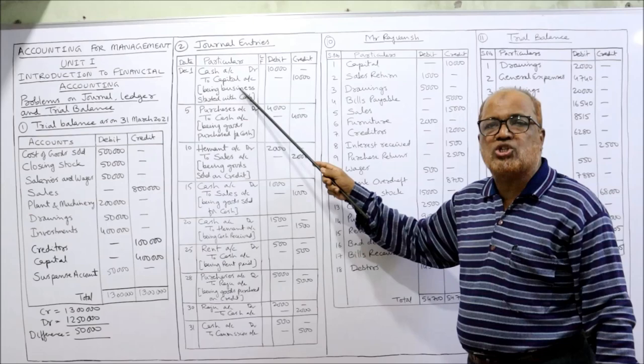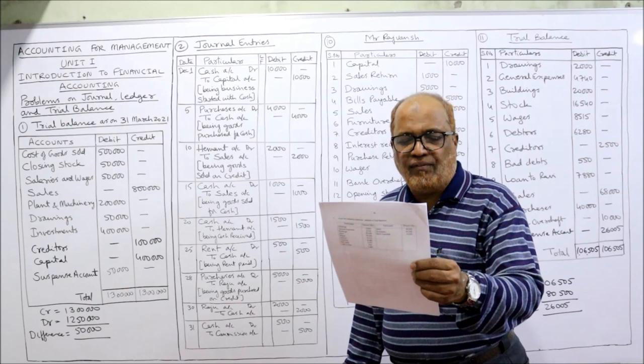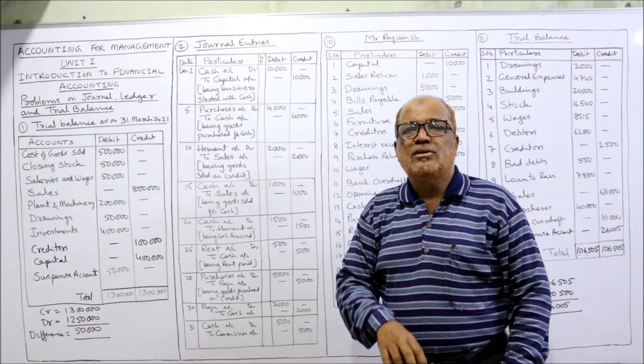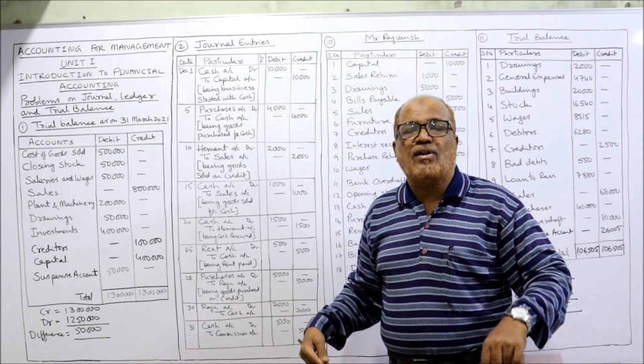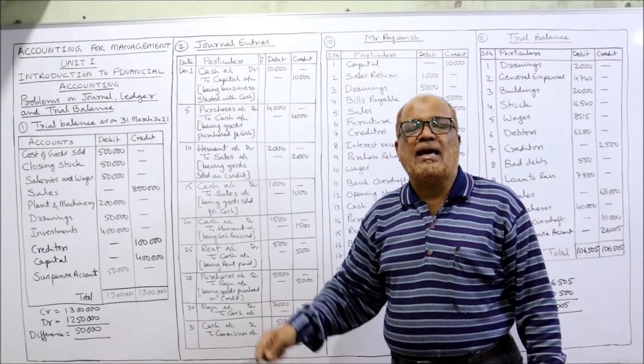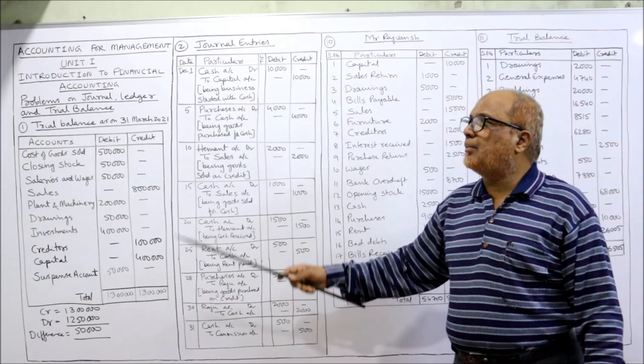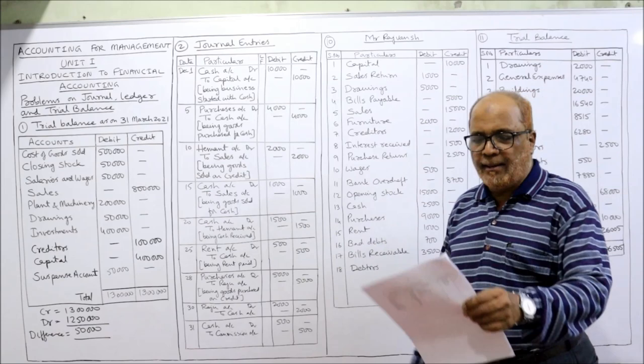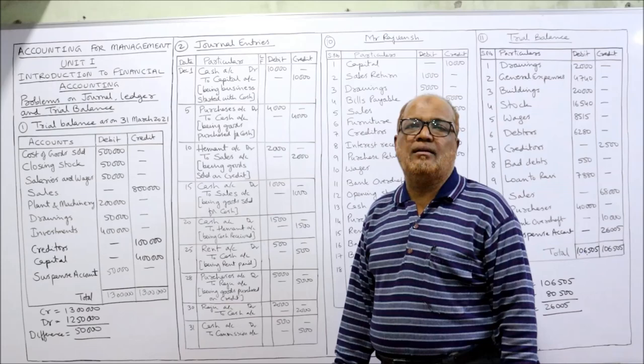Fifth: bought goods for cash. When we purchase goods, goods are coming in, so instead of writing goods we write purchases — purchases account debited. We are paying cash, so cash is credited. Entry: Purchases account Dr. 4,000 to Cash account 4,000. Narration: being goods purchased for cash.